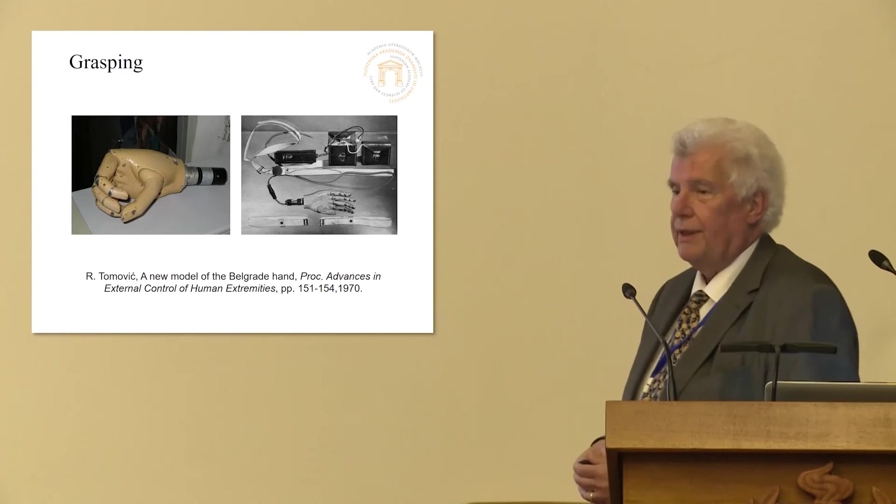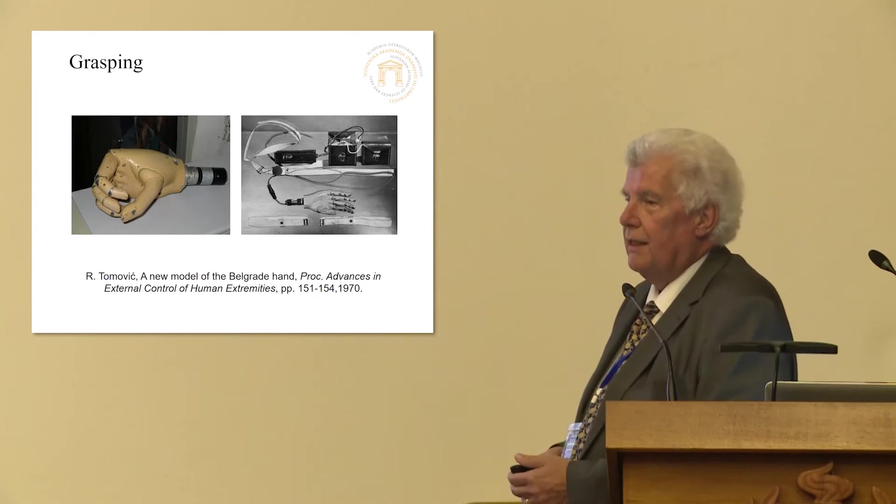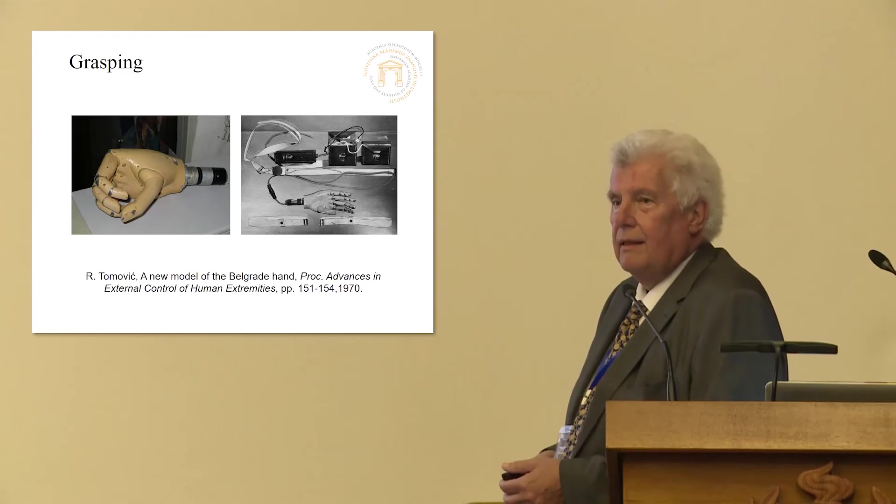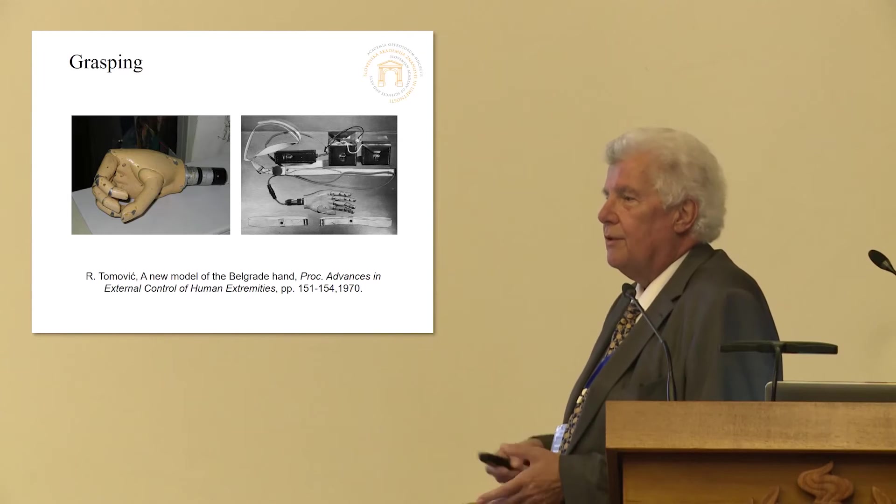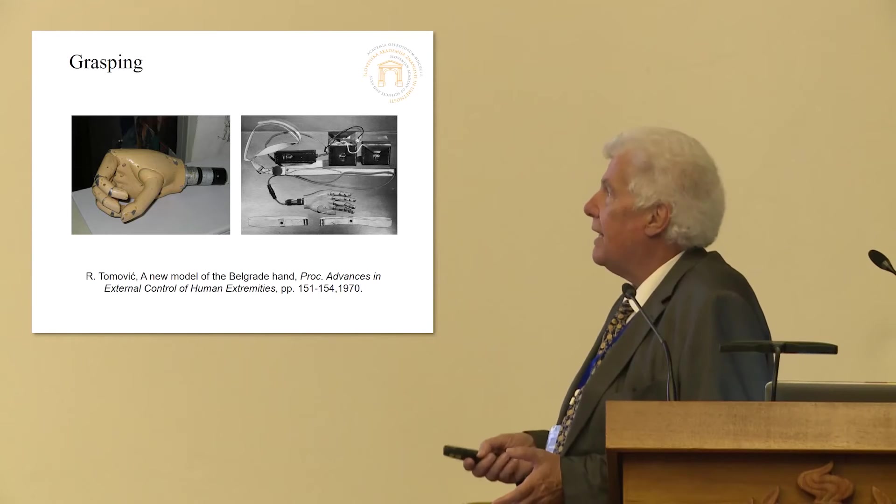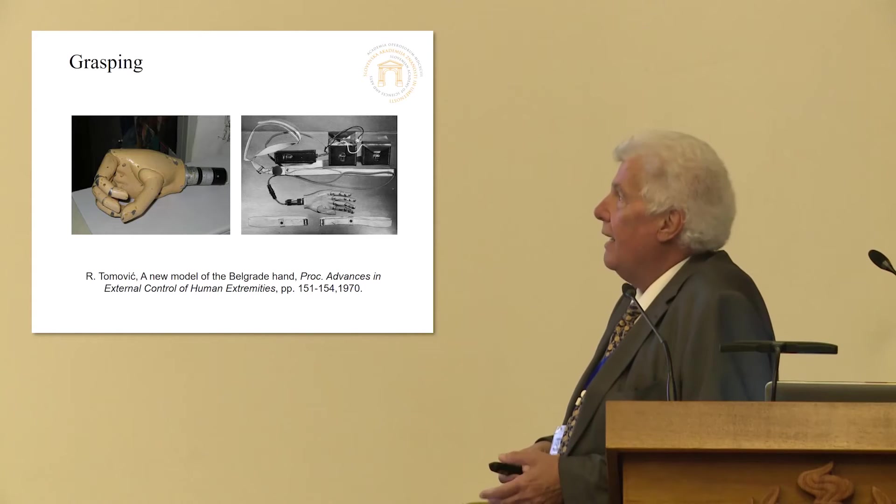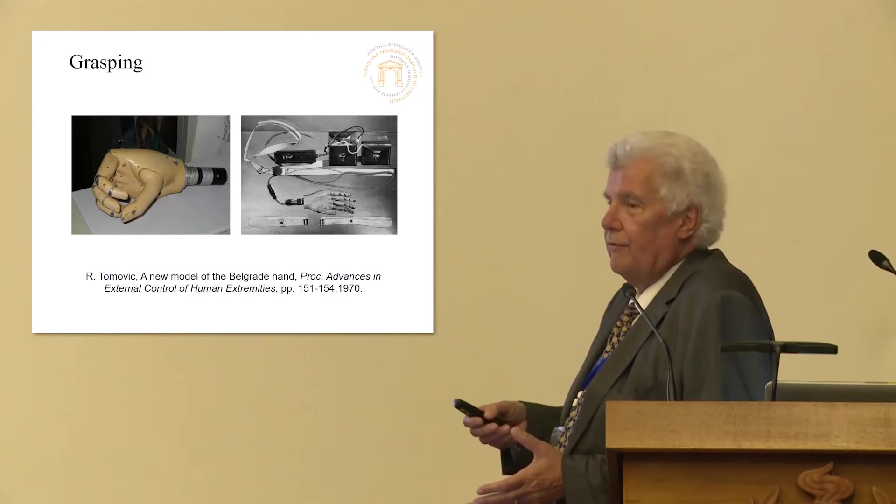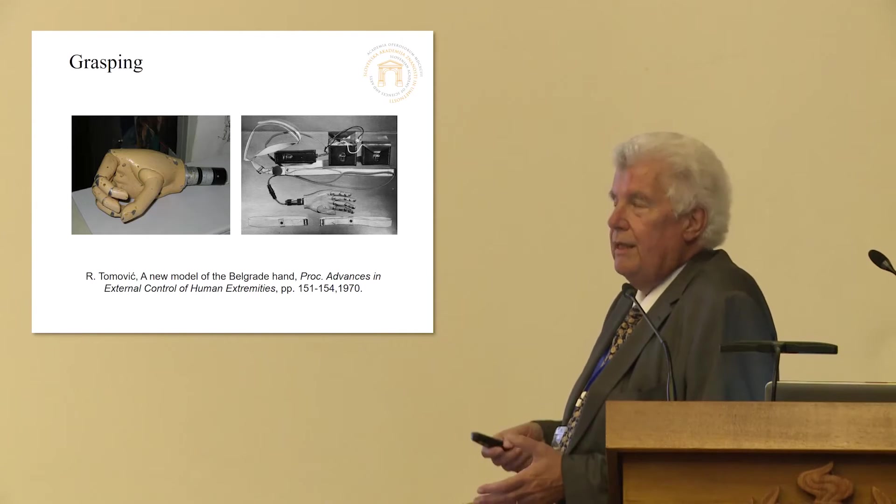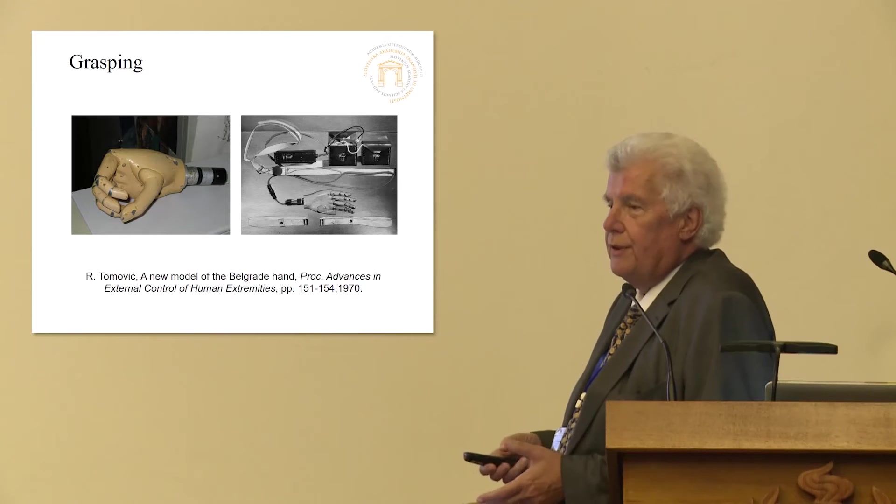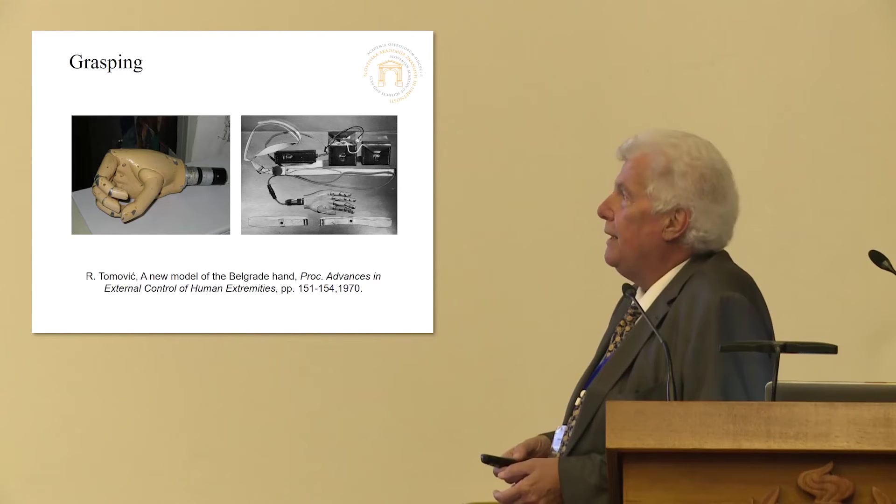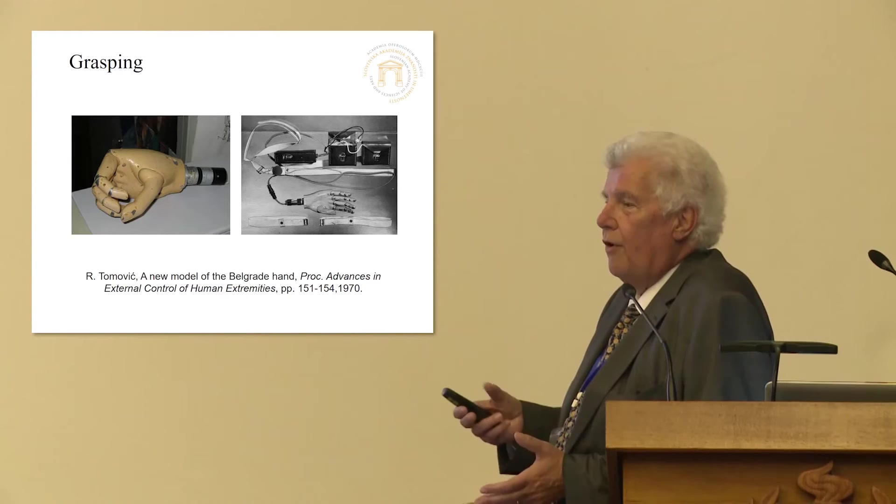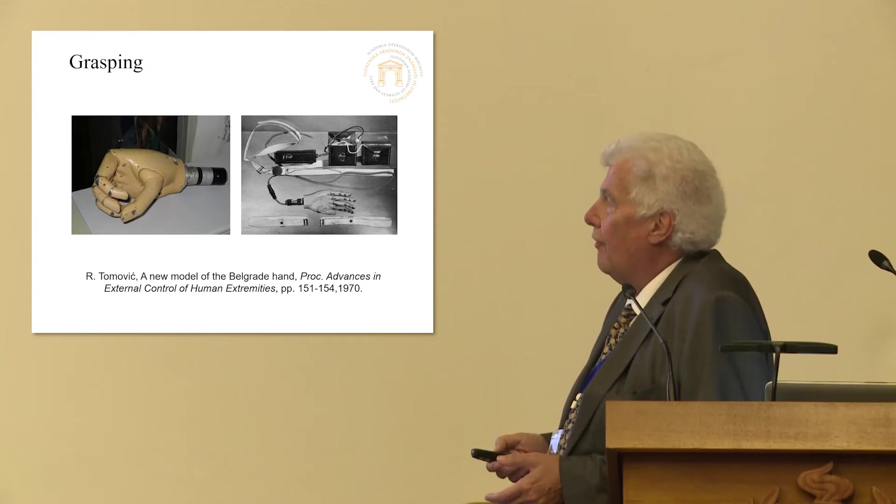Of course, we heard already very much about the Belgrade hand. Today, we have many humanoid robots, and all these robots have five fingers, but in my times, there was just Belgrade hand. And we already heard that this hand had the capability of voluntary control by EMG, the capability of force control through the sensors that were built into the hand, and also of a very interesting way of pre-shaping the fingers.